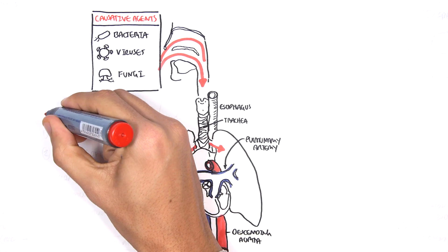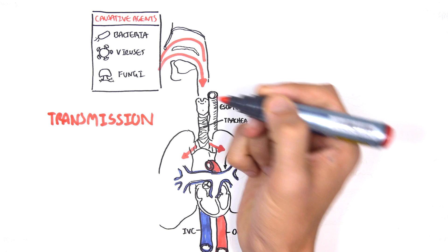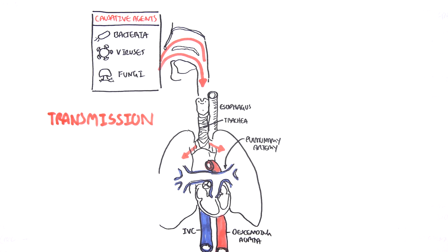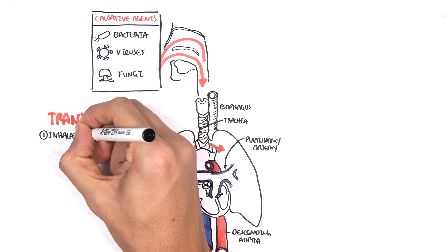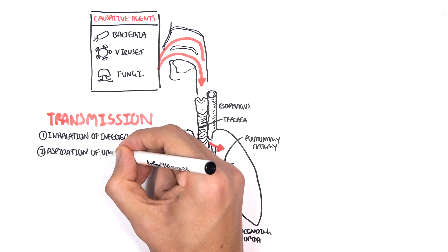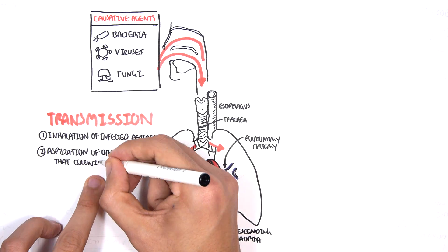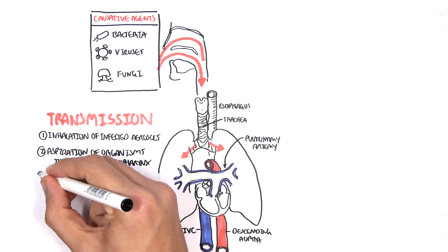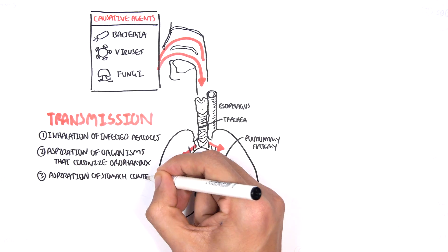But there are ways of transmission aside from being inhaled into the lungs. So the first one is essentially inhalation of infected aerosols. Two can be aspiration of organisms that colonize the oropharynx. Three can be aspiration of stomach content.